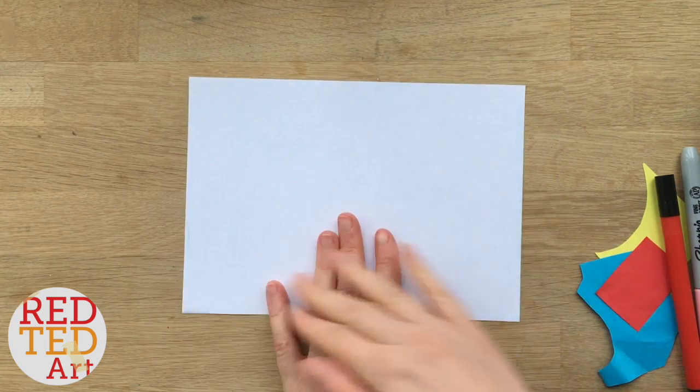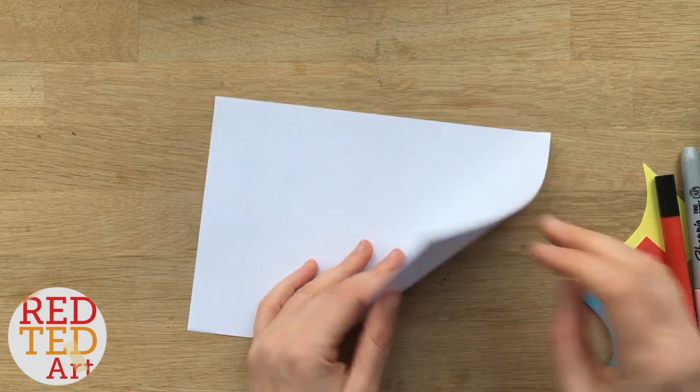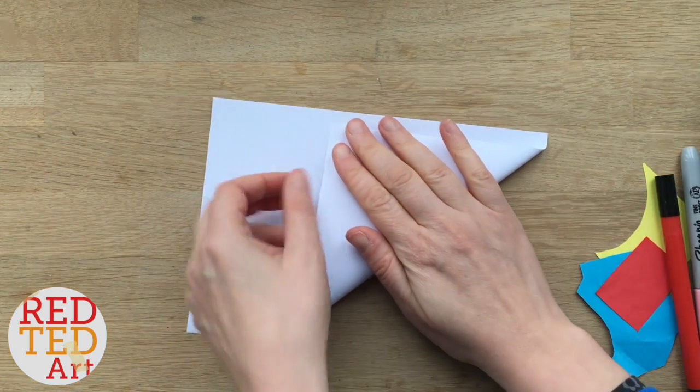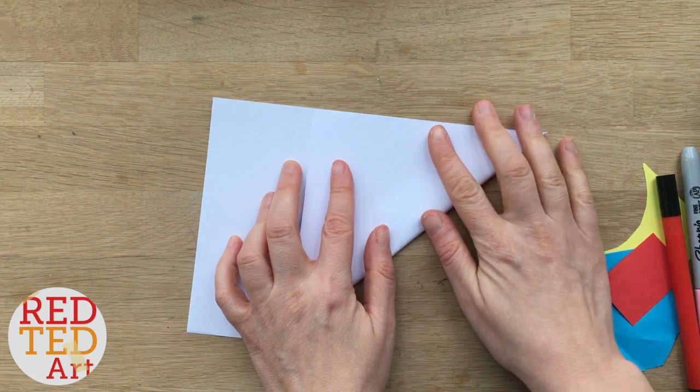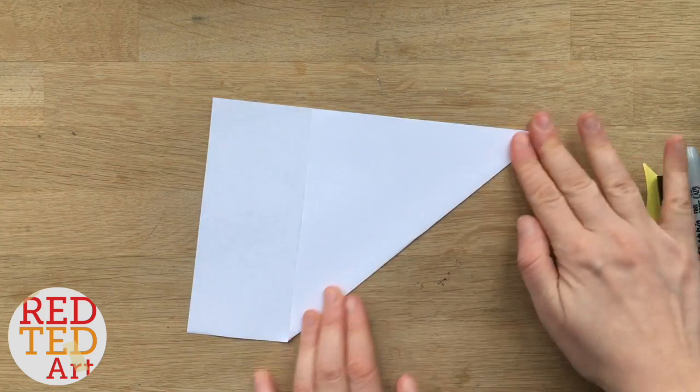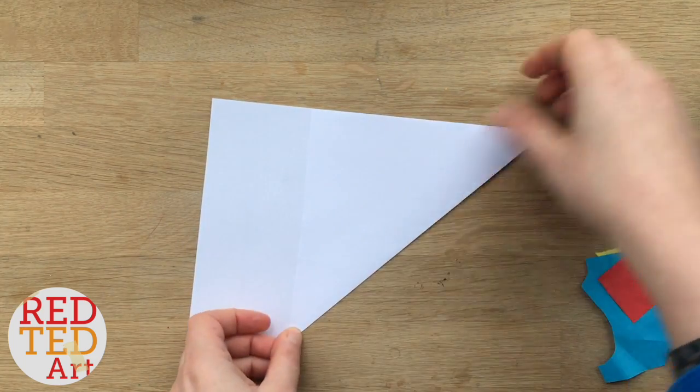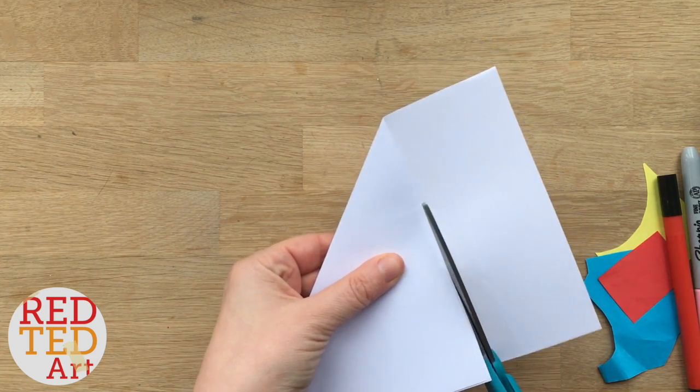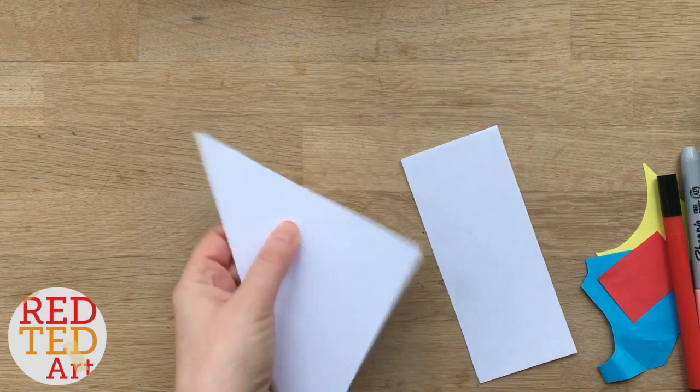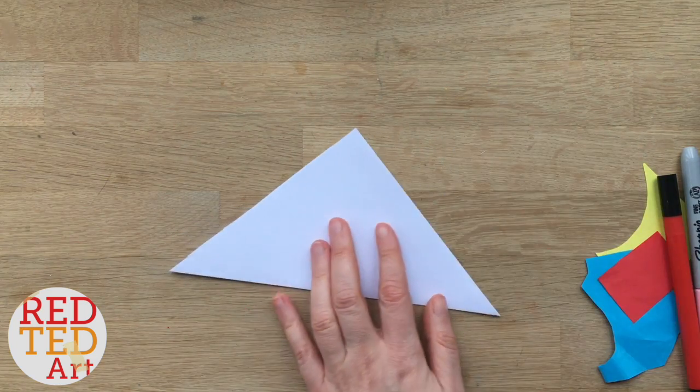As per usual a half a sheet of A4 paper and we're going to turn it into a square by folding over one edge as neatly as possible. Give it a good crease. Cutting this bit off, you can keep it because you can still use it for other things or as a note.